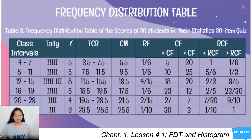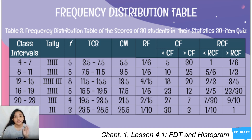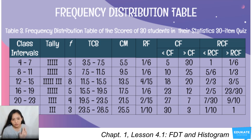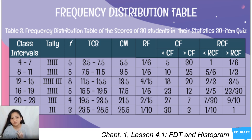Class marks (CM) are obtained by averaging the lower and upper limits of each class interval. For the first interval, 4 plus 7 equals 11, divided by 2 equals 5.5. You can also apply the same shortcut: notice there is a constant difference of 4 between class marks, so just add the class size: 5.5, 9.5, 13.5, 17.5, 21.5, and 25.5.